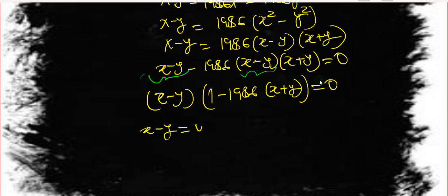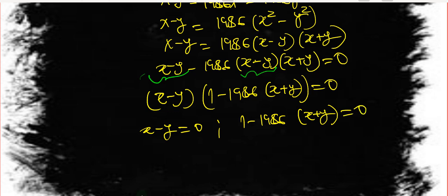From this factored form we have two cases: either x minus y equals zero, which we'll call equation 3, or 1 minus 1986(x plus y) equals zero, which we'll call equation 4.